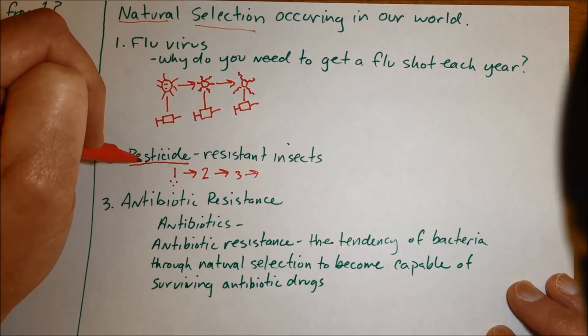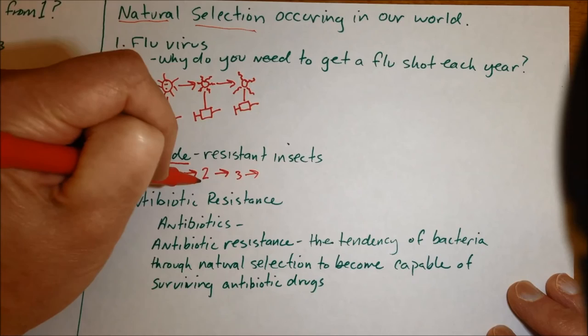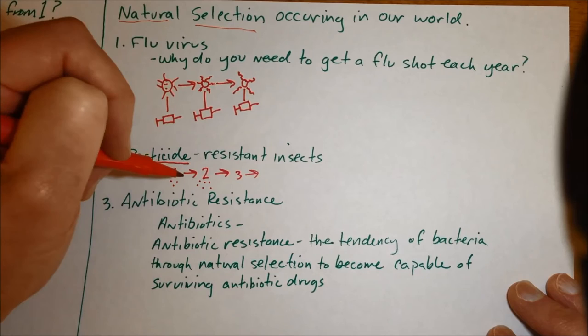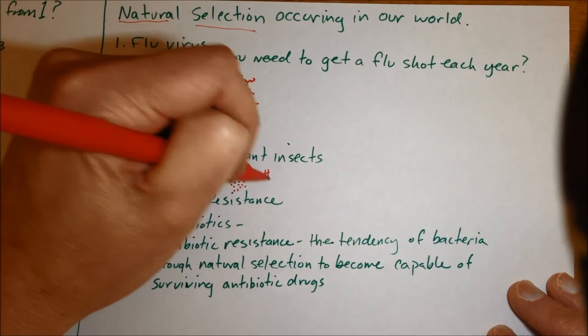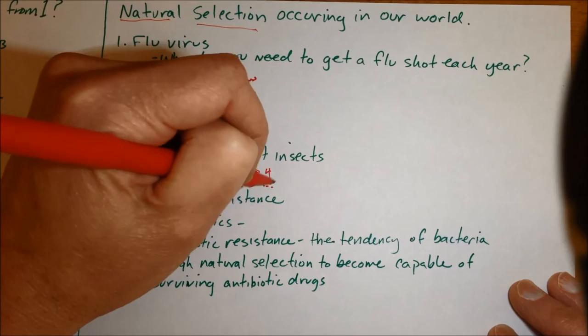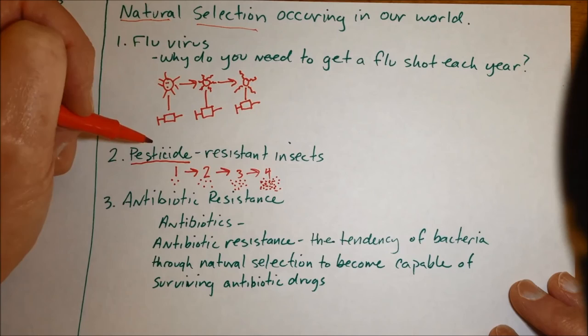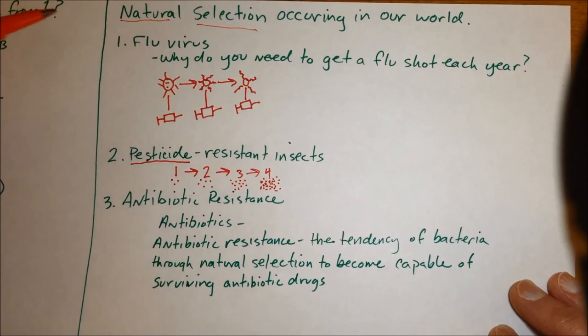And the ones that had genetic variations that allowed them to survive they would reproduce and repopulate the cornfield the next year and so the farmer would spray the pesticide and they'd kill off most of them but then the third year you'd have these ones that had the genetic variation that allowed them to survive reproducing even more and very quickly within a few decades you have to the point where the insects that have survived are all the resistant ones and the pesticides actually don't work that well. So it's an example of natural selection killing off the weak insects and the ones that are genetic resistant coming back and being strong.